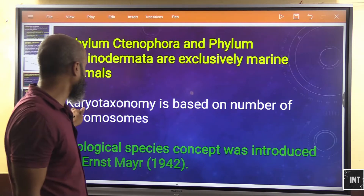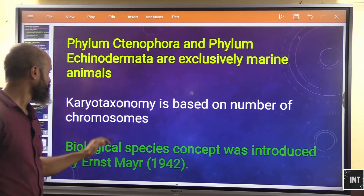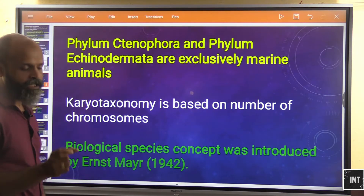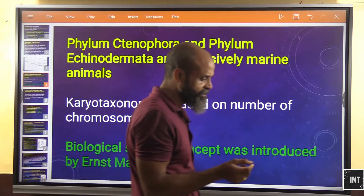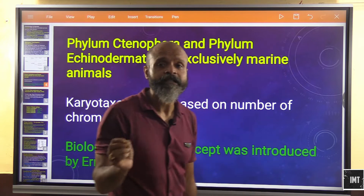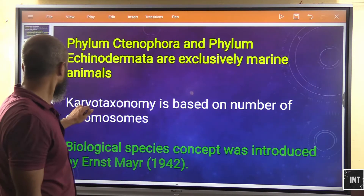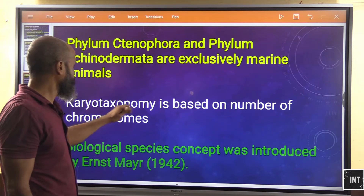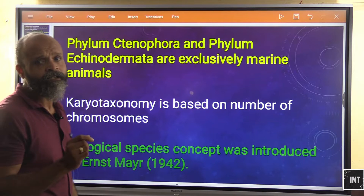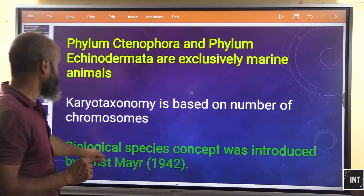Karyotaxonomy is based on the number of chromosomes. Karyokinesis is the division of the nucleus, and cytokinesis is the division of cells. Karyotaxonomy is therefore related to the nucleus and the number of chromosomes.